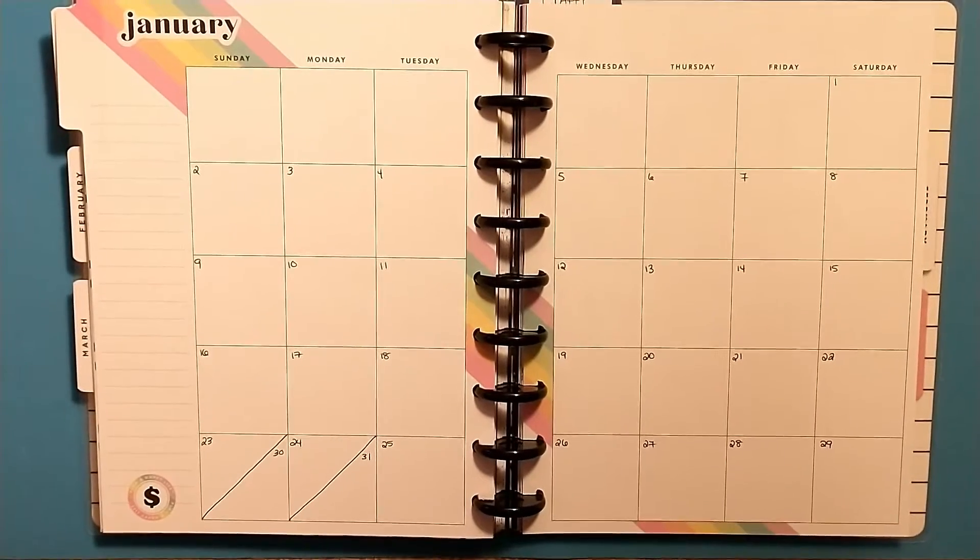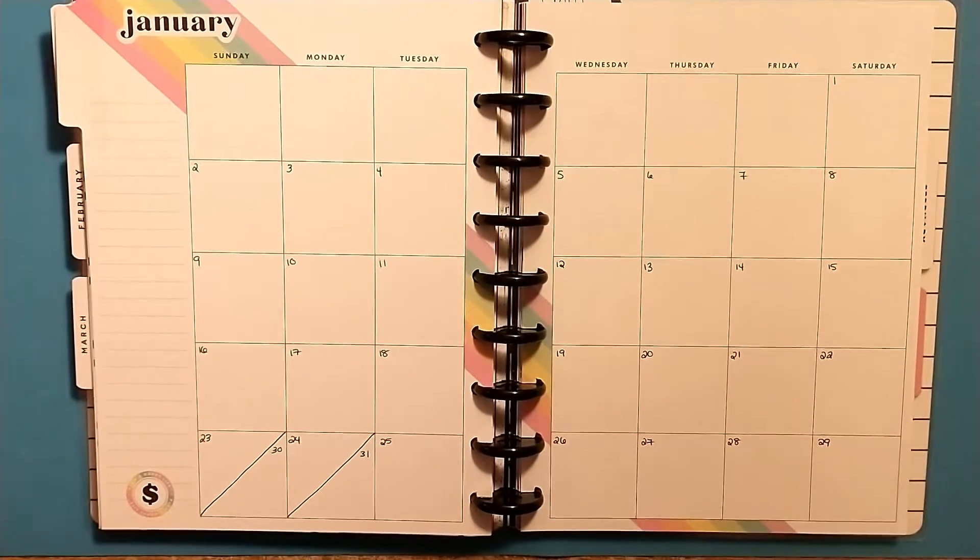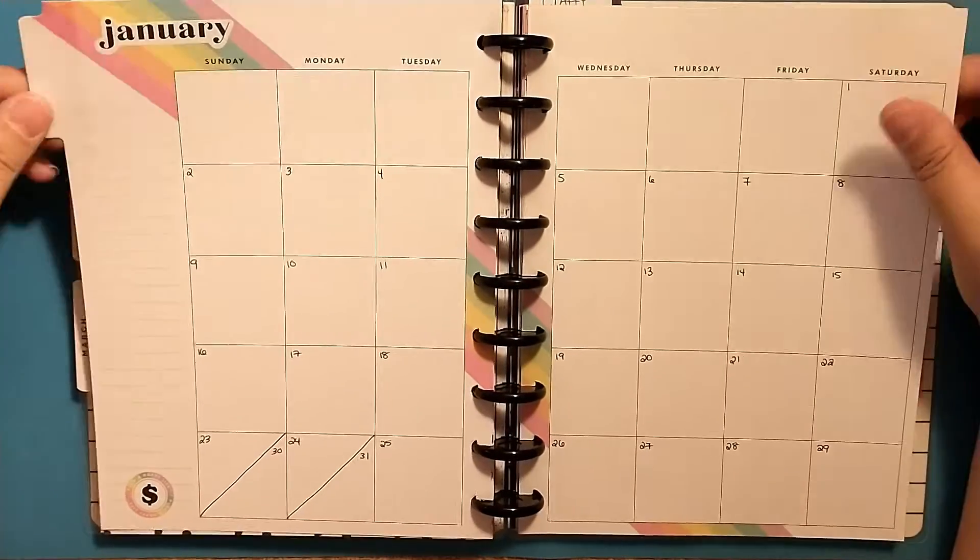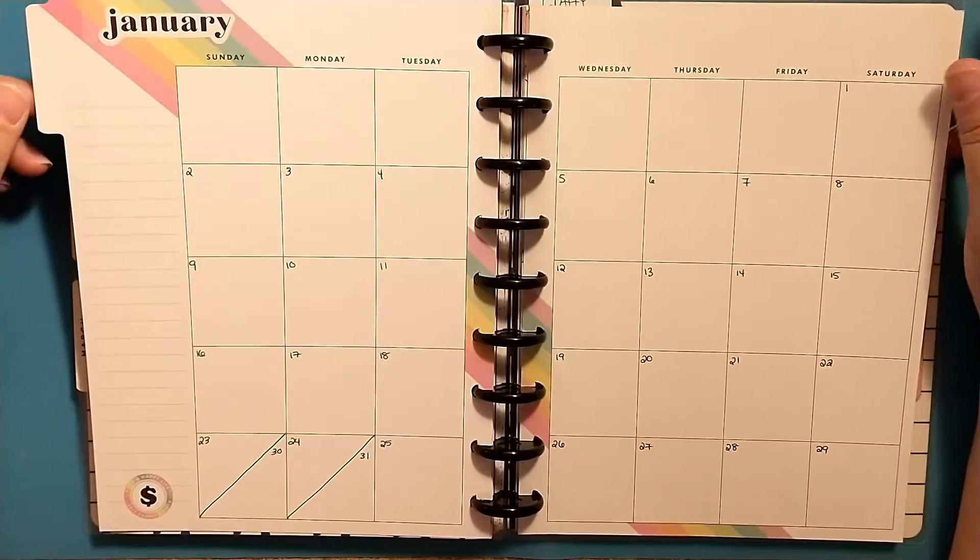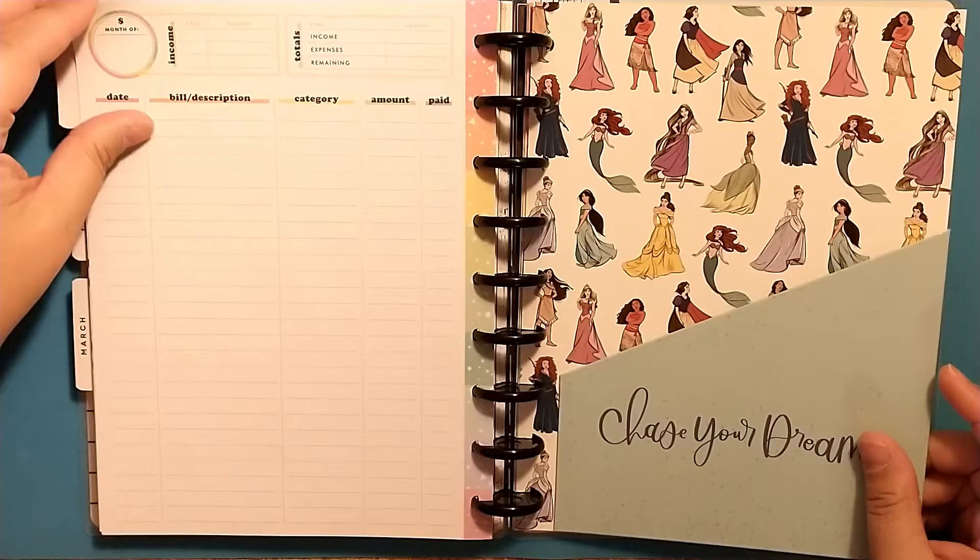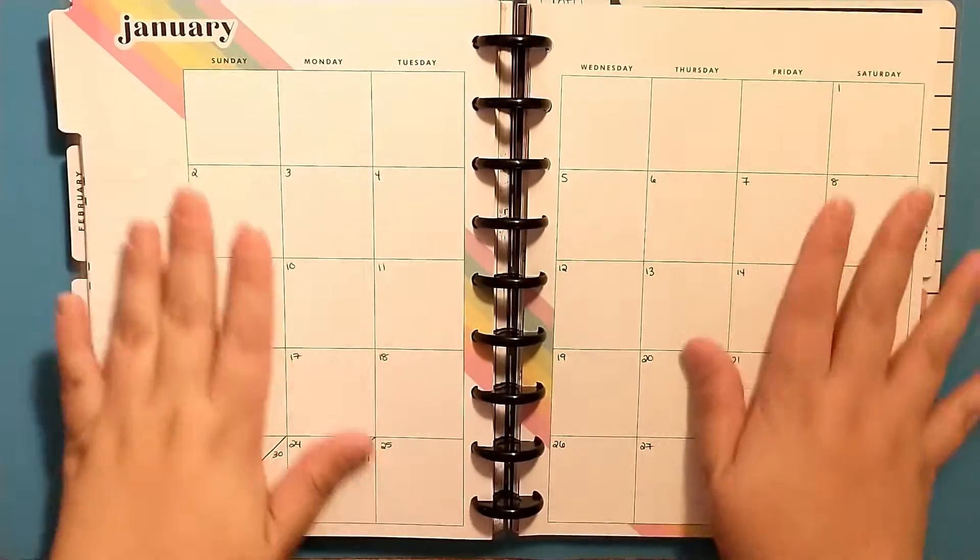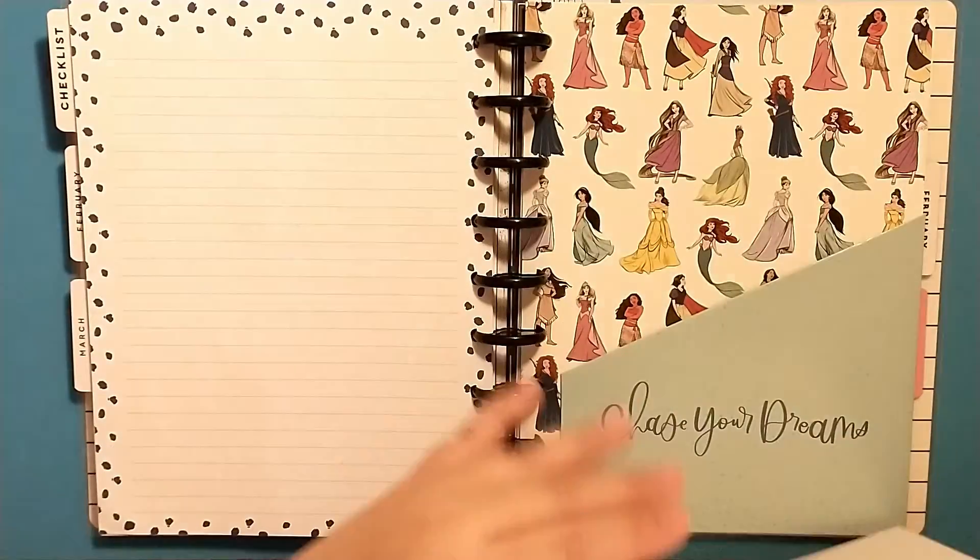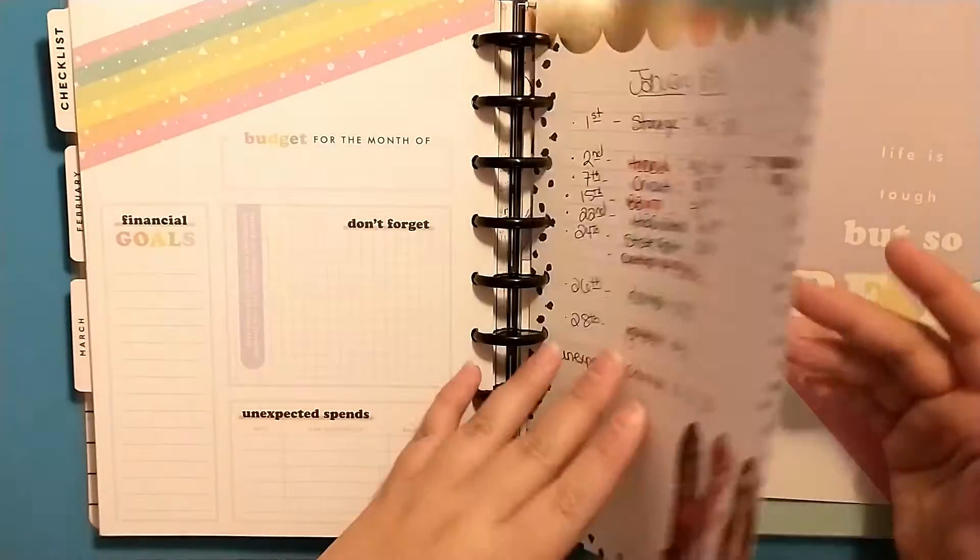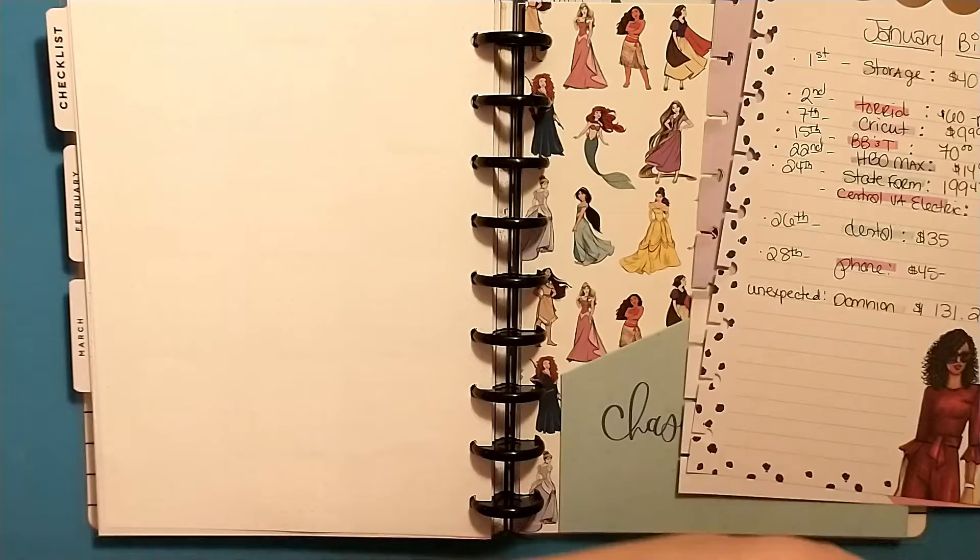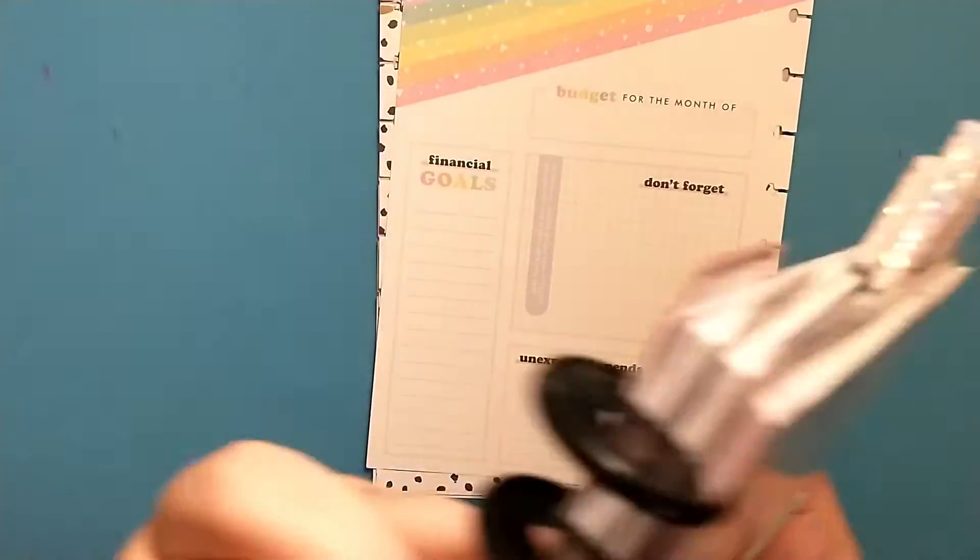Hey crafty friends and planner babes, today I'm going to be planning for the month of January in my classic budget planner. These pages here I'm going to keep private and to myself, I'm not going to share those, but I don't mind sharing how I plan my monthly out. So I'm going to take these pages off, then I also have my cheat sheet here with my bills, and I want to take this page off as well.